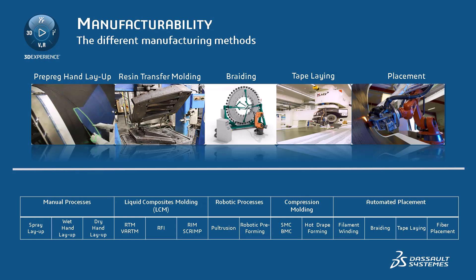Generally, hand layup of fabrics or UD tapes are currently the most common manufacturing techniques. Liquid composites molding techniques are made with software partners like ESI or Convergent. Forming processes are executed with a dedicated CATIA application and software partners like Convergent for HDF. Automated placement processes like braiding, tape-laying, or fiber placement are realized with software partners like Coriolis, Ingersoll, MAGFIVES, or MTORUS.